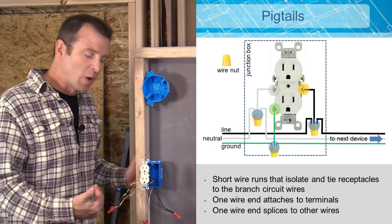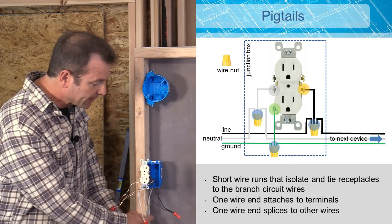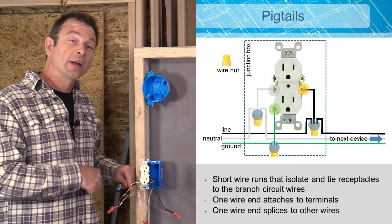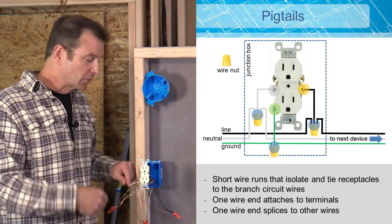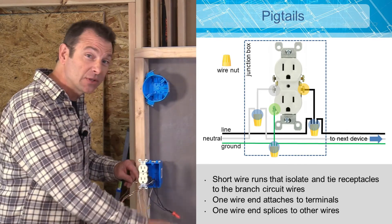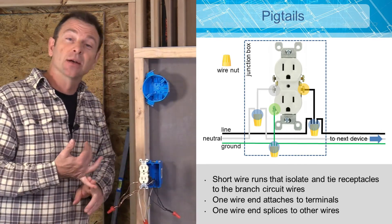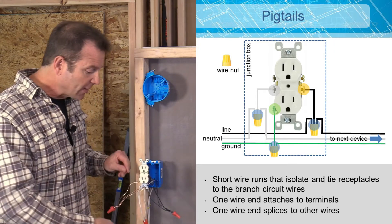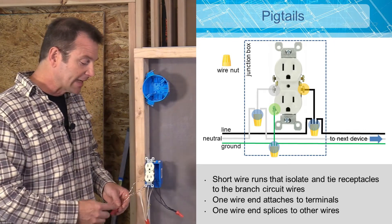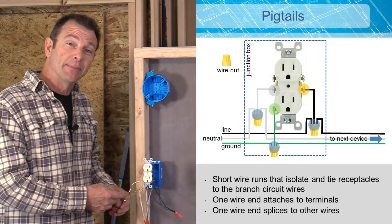Here's a quick review of what we just did. I've got a wire coming in that's giving me one hot, one neutral, and one ground. I have a wire going out to the next outlet. That's the same ground, neutral, and hot wire.